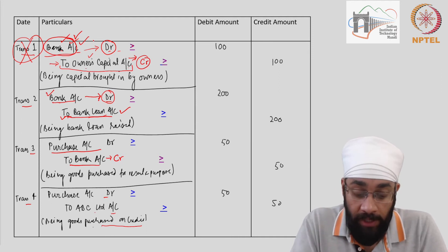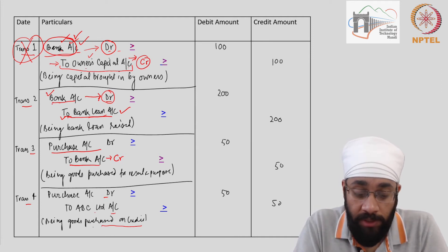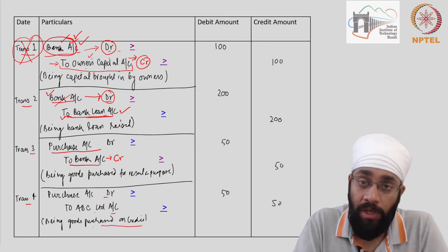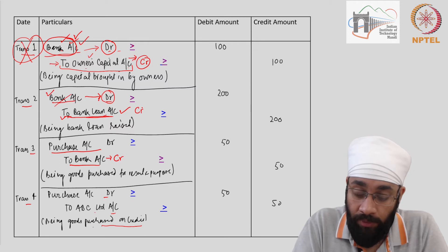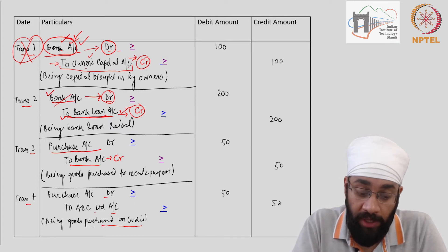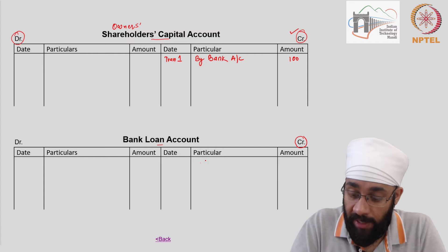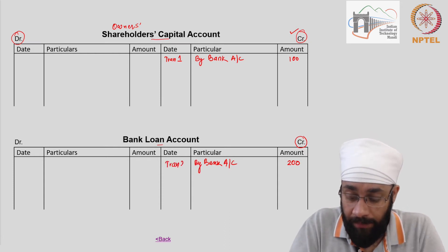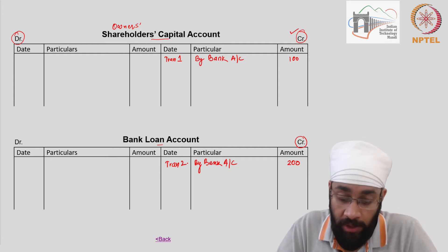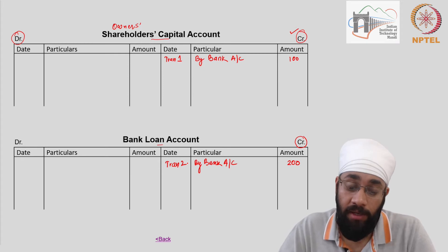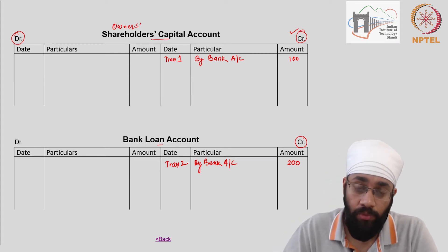Let's move forward to transaction two. We have already posted this transaction in the bank account, so bank loan account is what remains. Bank loan account is being credited, so I go to the credit side of bank loan account and write 'By Bank Account' with the amount of 200. I write the transaction number in place of date, and done — the journal entry relating to bank loan account has been posted.